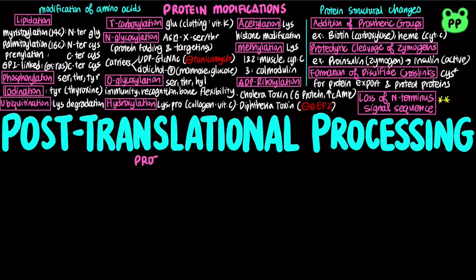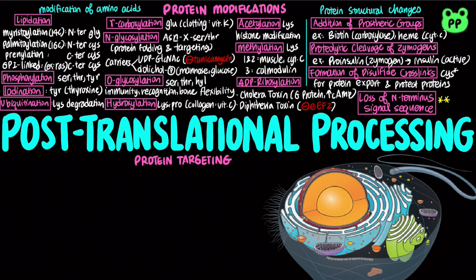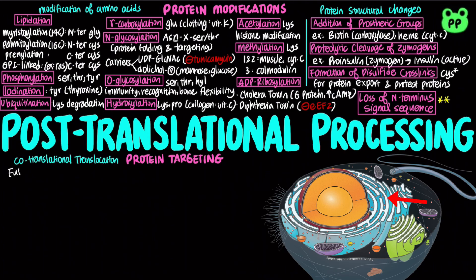Proteins carry out specific functions in various parts of the cell and in specialized organelles. Therefore, proteins synthesized on ribosomes need to be targeted to their final cellular destinations. Recall that a section of endoplasmic reticulum known as the rough ER contains bound ribosomes that synthesize proteins for the endomembrane system and secretory proteins. Polypeptide synthesis always begins on the free ribosome in the cytosol, and synthesis finishes in the cytosol unless the N-terminal signal sequence directs the eukaryotic ribosome co-translationally to the rough endoplasmic reticulum, which occurs in a series of seven steps.